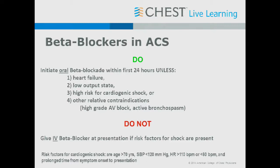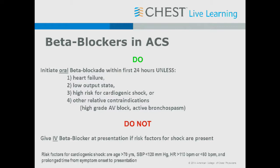A word about beta blockers in acute coronary syndromes and STEMI: you should give beta blockade within the first 24 hours unless there's a contraindication. Patients with acute heart failure, low cardiac output, or high risk for cardiogenic shock shouldn't get beta blockers even though they're generally indicated. Don't give IV beta blockers if there are many risk factors for shock.